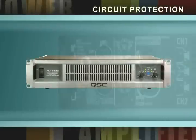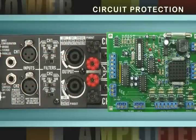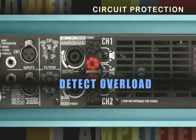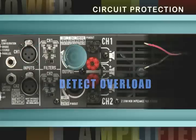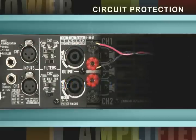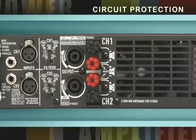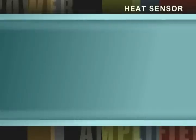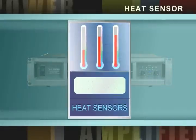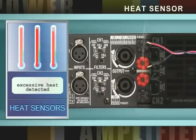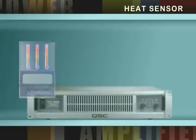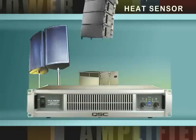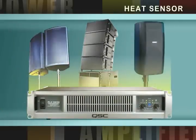Recent developments in amplifier design have seen circuits integrated that detect overload on both the input and output stages, virtually eliminating short circuits from damaging the amplifier. Heat sensors incorporated into the amplifier can tell the amplifier to shut down in case of excessive heat due to shorted loudspeaker cables or too low of an impedance caused by too many loudspeakers being connected to the amplifier.